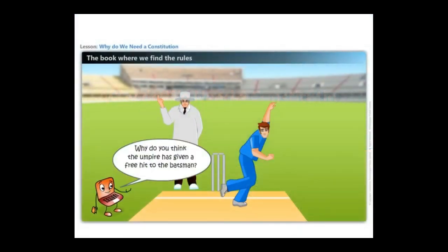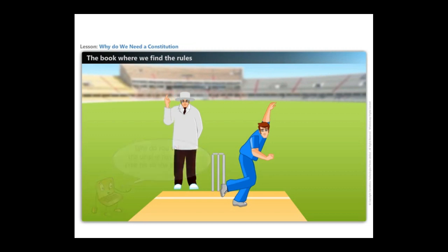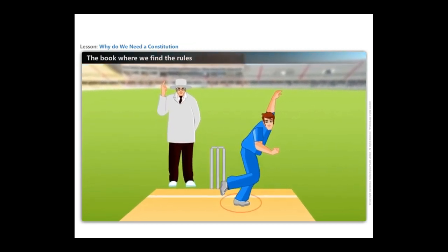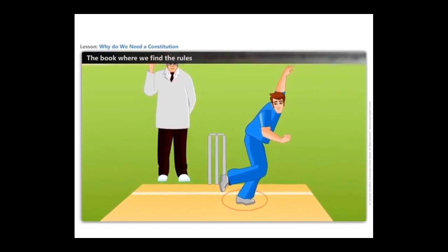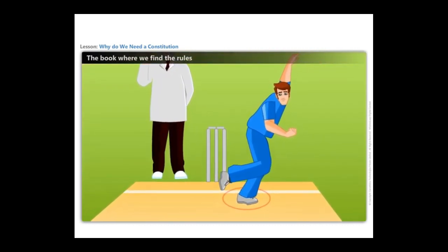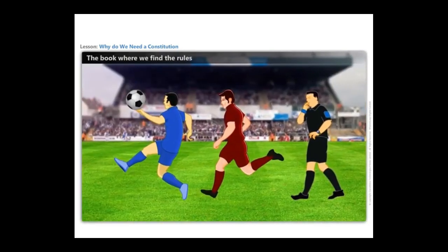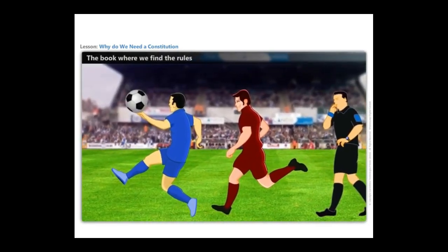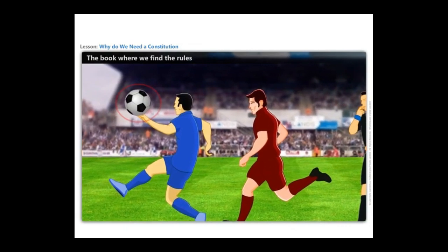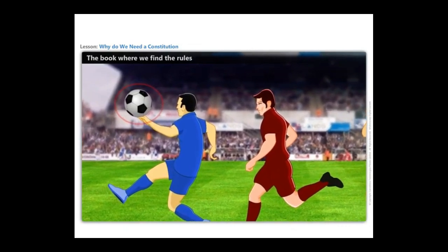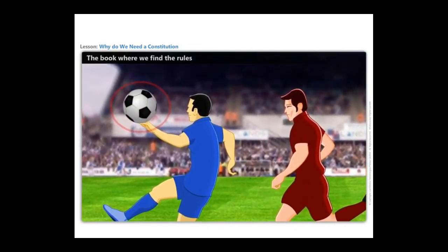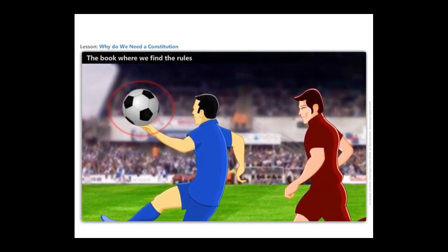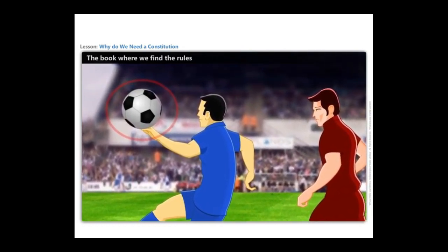Why do you think the umpire has given the free hit for the batsman? The bowler has crossed the crease completely, which is considered a no-ball. You all know the rules of cricket. Similarly, in football the player should not touch the ball with his hand. In every game we have some rules, and these rules help define the game and help us distinguish one game from another.